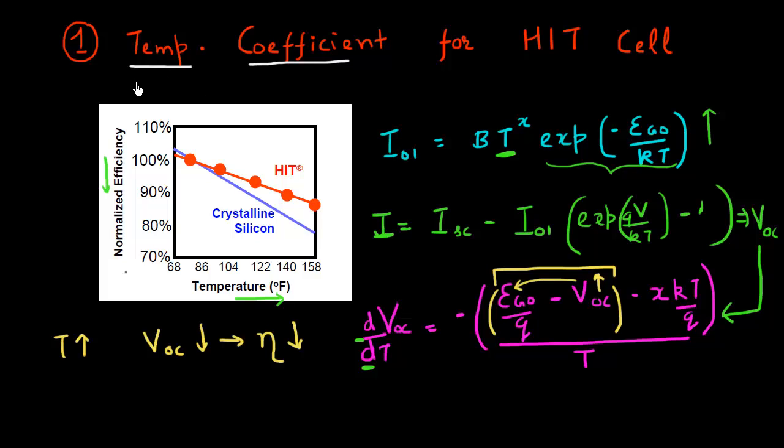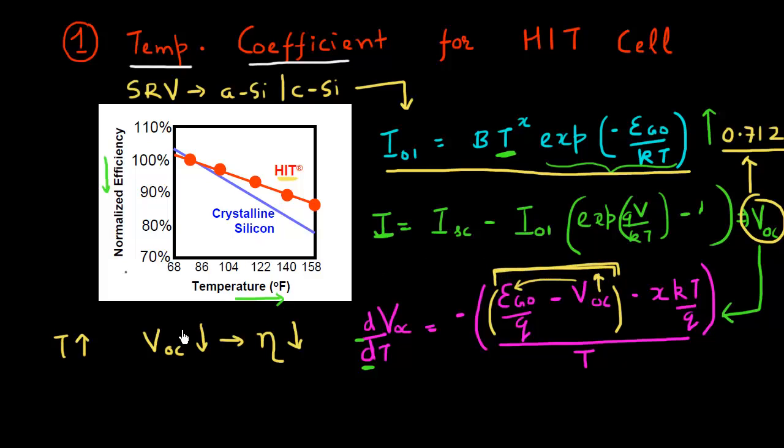Because of the low surface recombination velocity achieved in this HIT cell, because of this good passivation between my amorphous silicon and the crystalline silicon at the surface, my I01 is lower, or my VOC is higher. My VOC in HIT cell is more than 0.7 eV. And that essentially reduces this term. As a result, the VOC decrease as a function of temperature reduces.